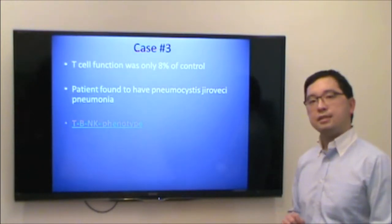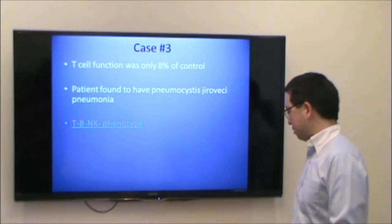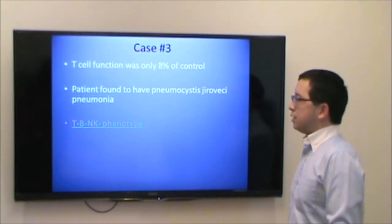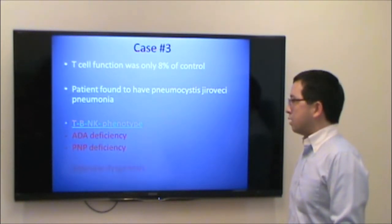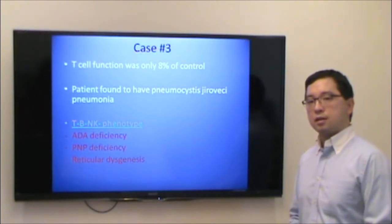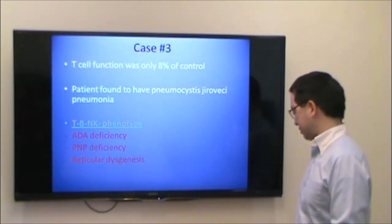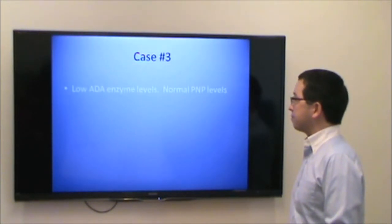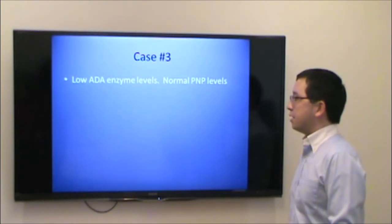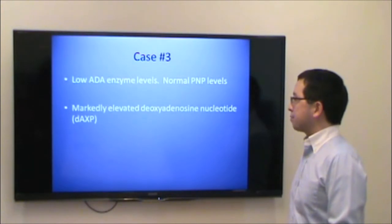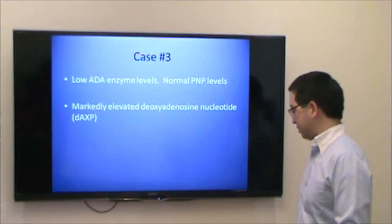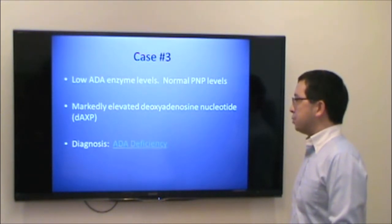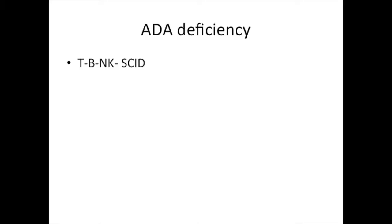This patient has a T-negative, B-negative, NK-negative phenotype. When we think about this phenotype, we consider ADA deficiency, PNP deficiency, and reticular dysgenesis if the patient has additional neutropenia on top of the lymphopenia. This patient was found to have low ADA enzyme levels, normal PNP levels, and markedly elevated deoxyadenosine nucleotide toxic metabolite levels, confirming ADA deficiency. She received a haploidentical transplant and is doing well.